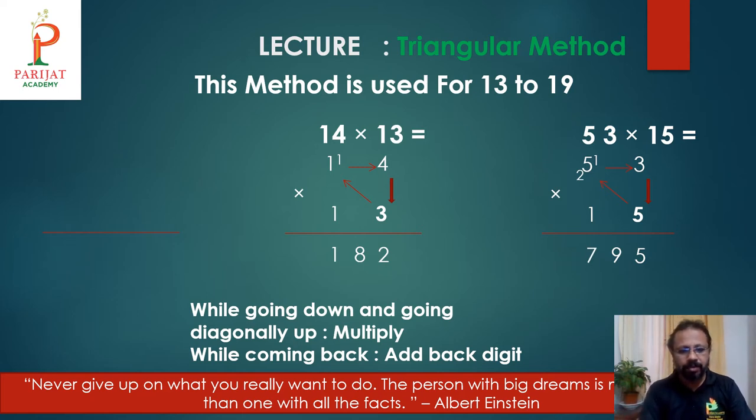Remember the steps. While going down and going diagonally up, we have to multiply. And while coming back, we have to add back digit. While coming back, we have to add digit or back digit.